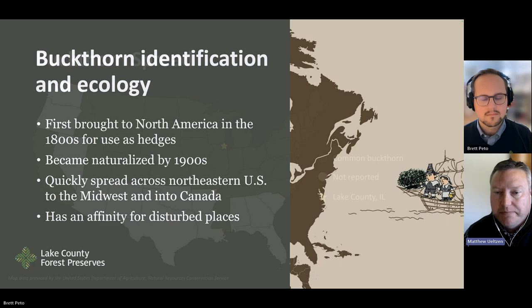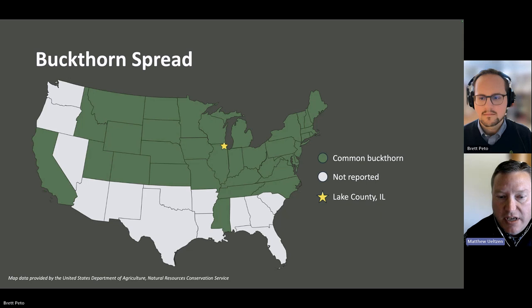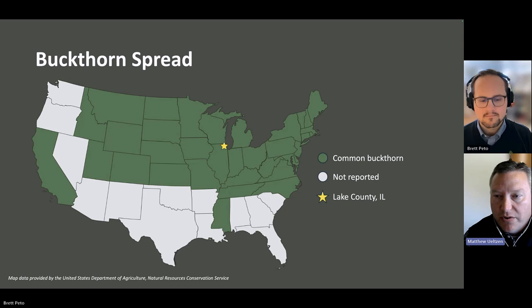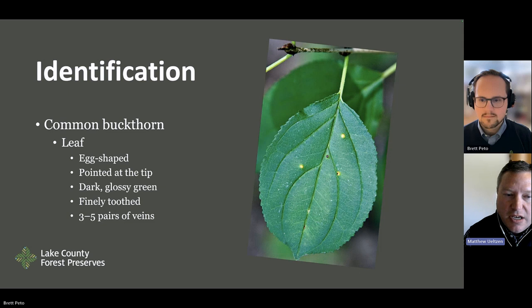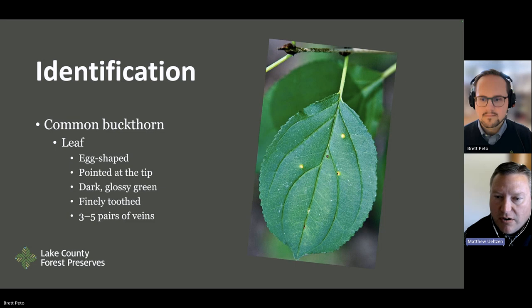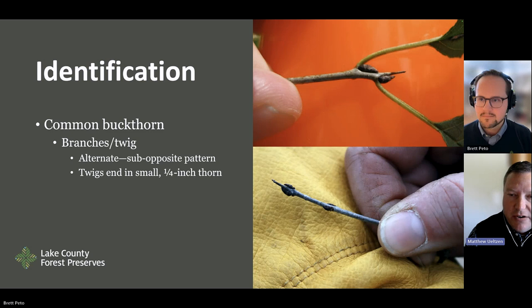Common buckthorn is reported from 35 states across the U.S., but is primarily a bigger factor in the northern and eastern parts of this range, especially New England, mid-Atlantic, and Great Lakes states. In terms of identification, the leaf of buckthorn is kind of egg-shaped, dark glossy green, with finely toothed edges and three to five pairs of veins that are impressed into the top of the leaf — they look like they've been pressed in from the top surface.